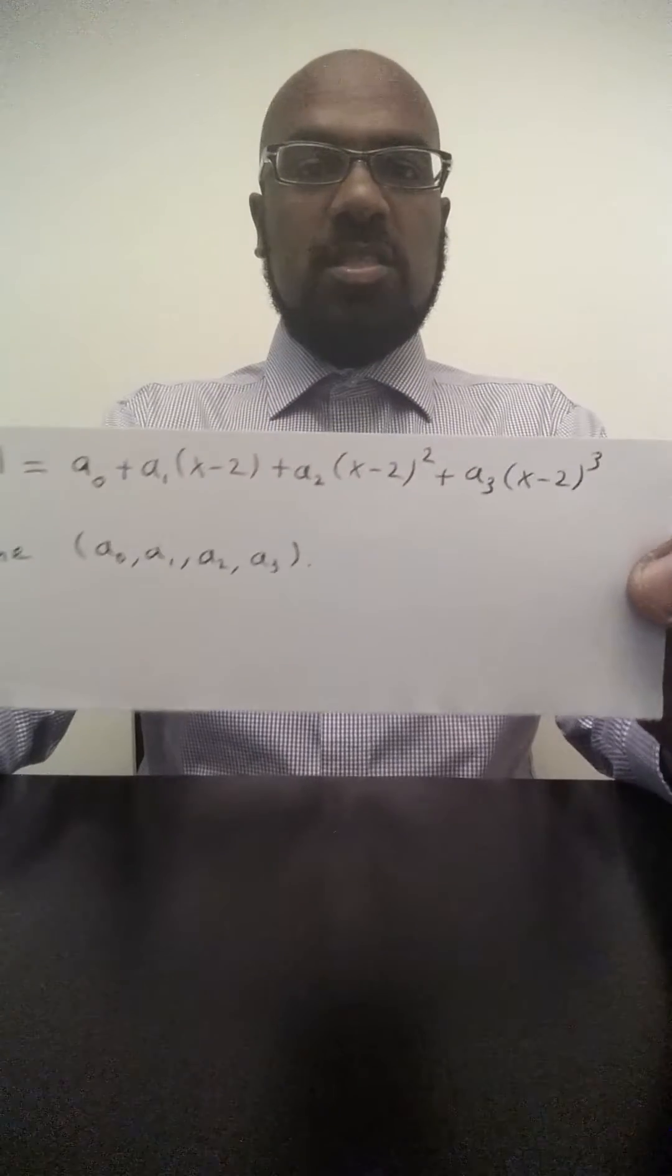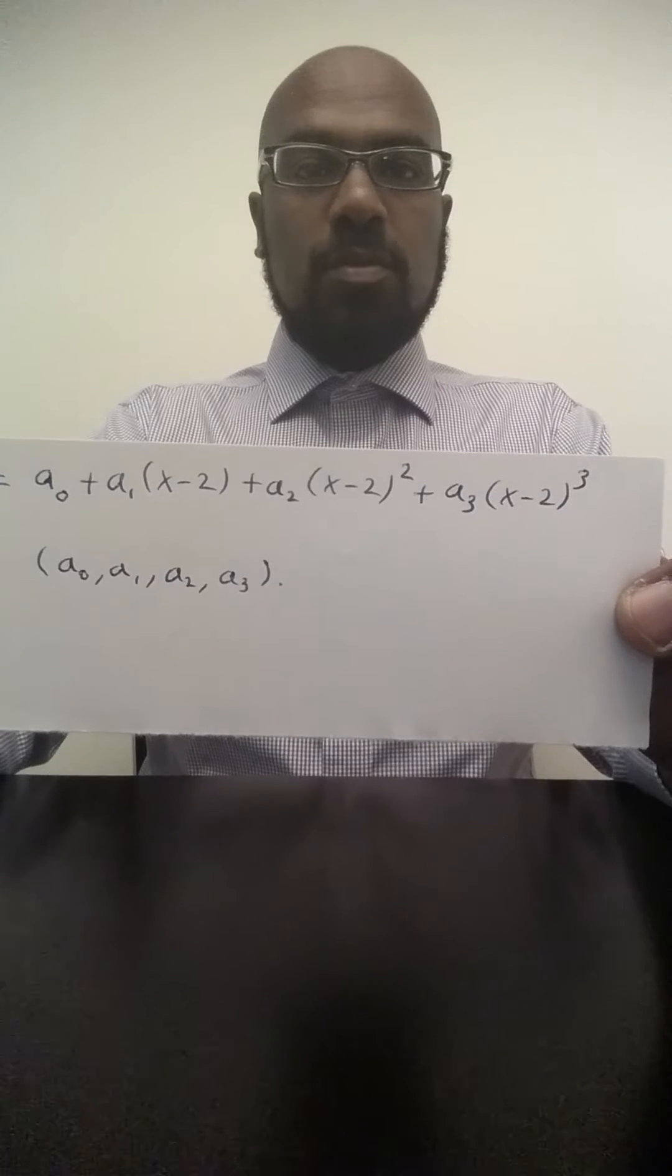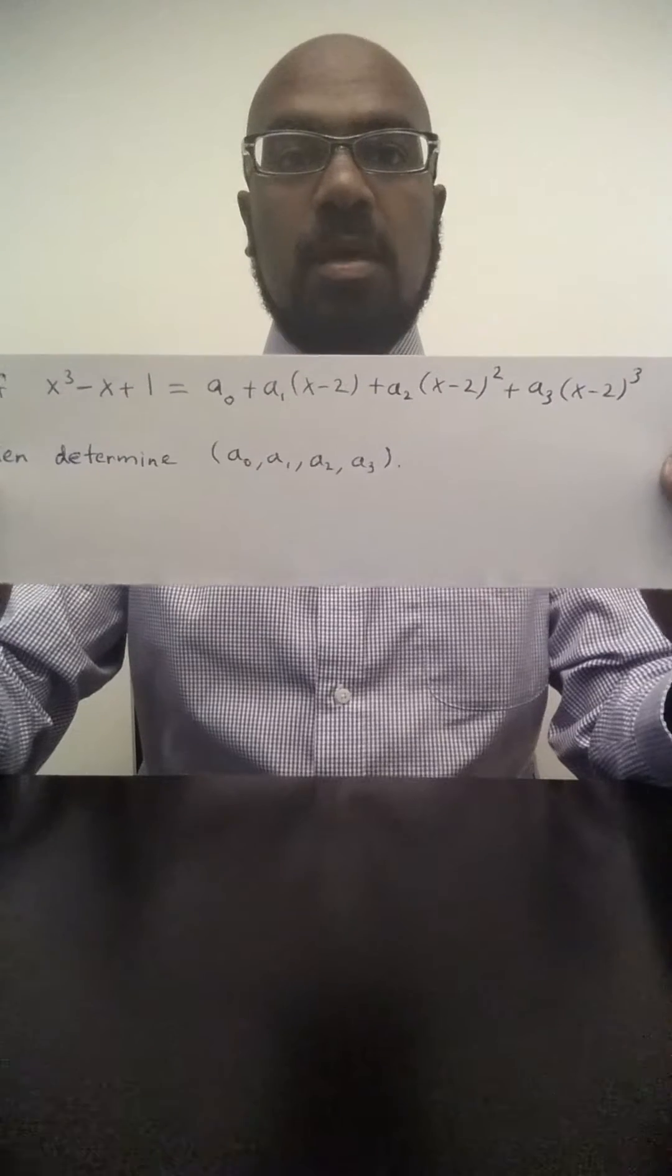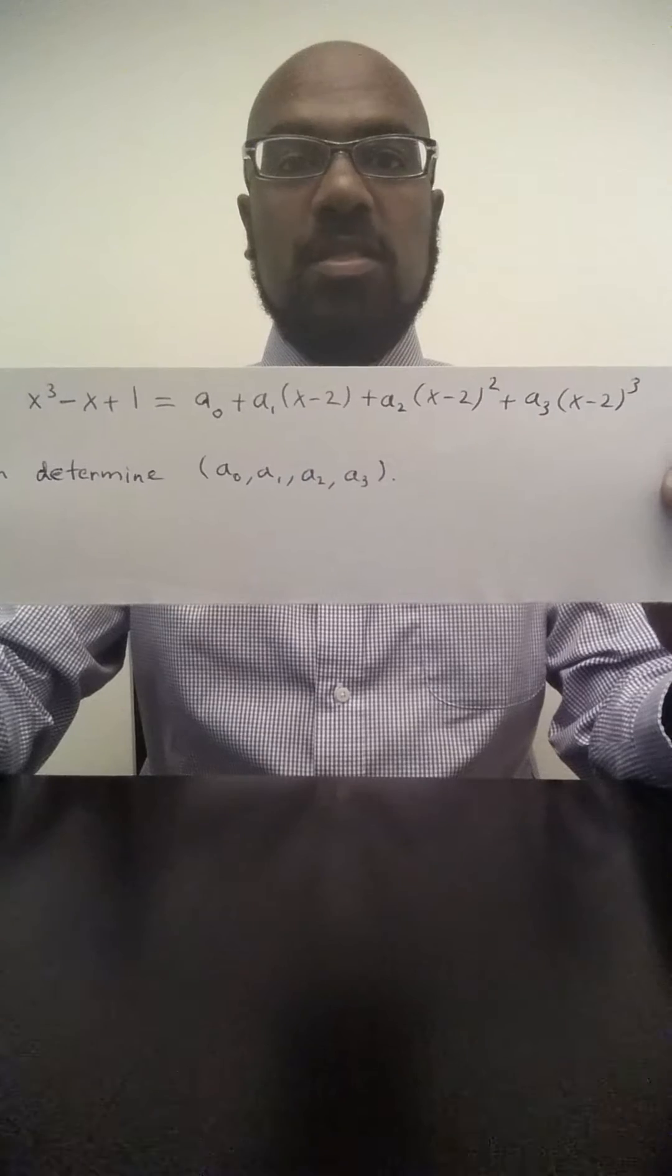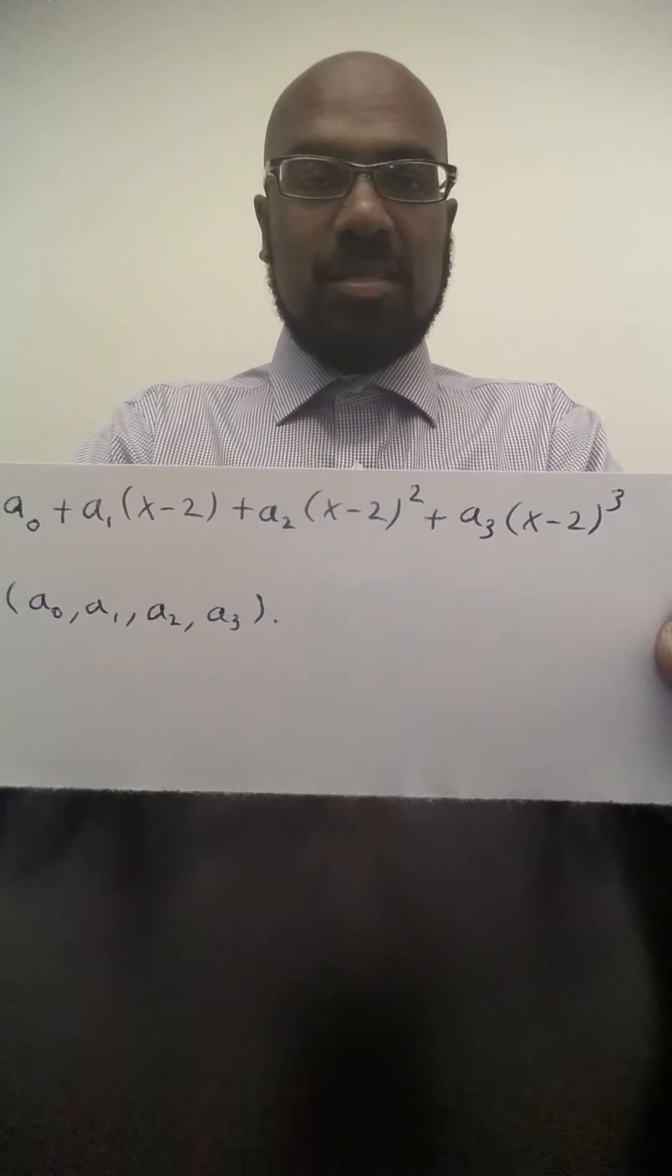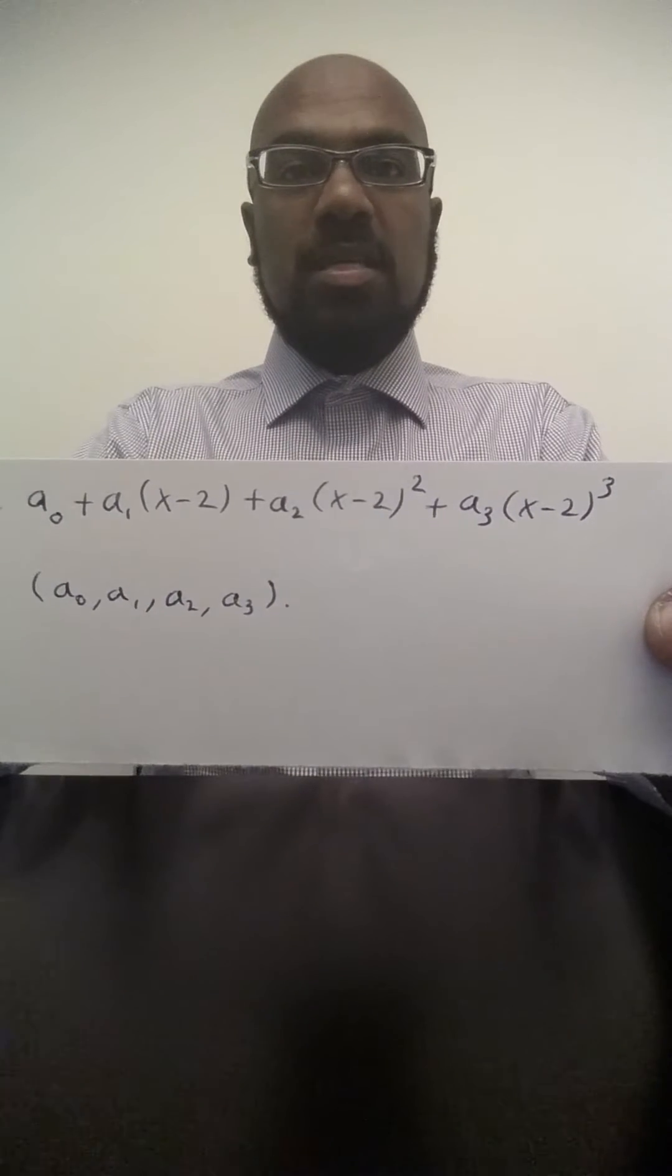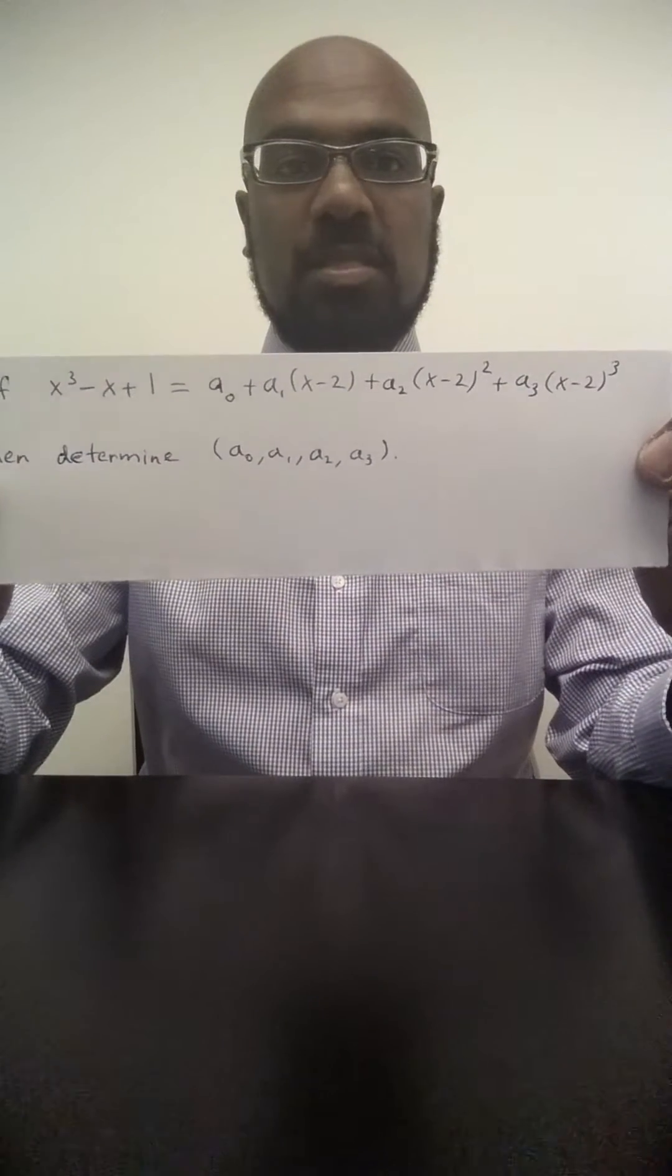One of the things to notice is this is a polynomial that is expressed in terms of powers of two. And so you can actually think about this from the point of view of Taylor series, and that'll give you a way to approach this problem that's much quicker. The key thing to notice is that when you have polynomials written like this, where you have a shift of some sort on the GRE subject test, that usually indicates that some Taylor series type problem is here in disguise.